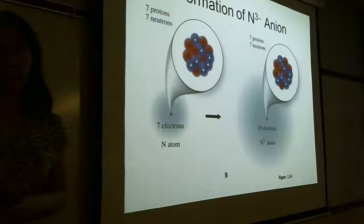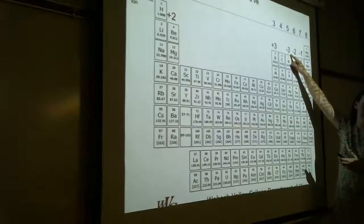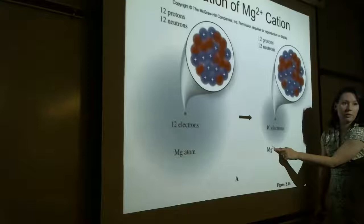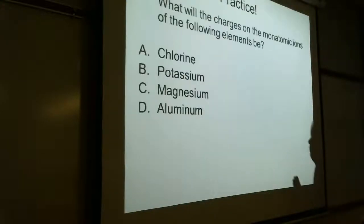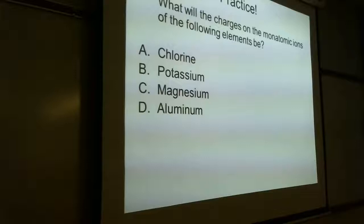The same is true with an anion. Looking at nitrogen versus nitride: the nucleus looks exactly the same — protons and neutrons have not changed. What changed is I've gained three electrons. We're not modifying the nucleus; we're modifying the number of valence electrons. Nitrogen is in group five, so everyone in group five has a minus three charge. When writing an ion, you must include the charge.